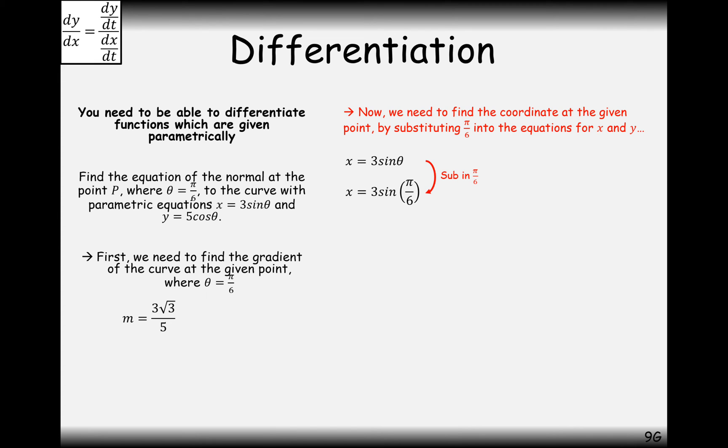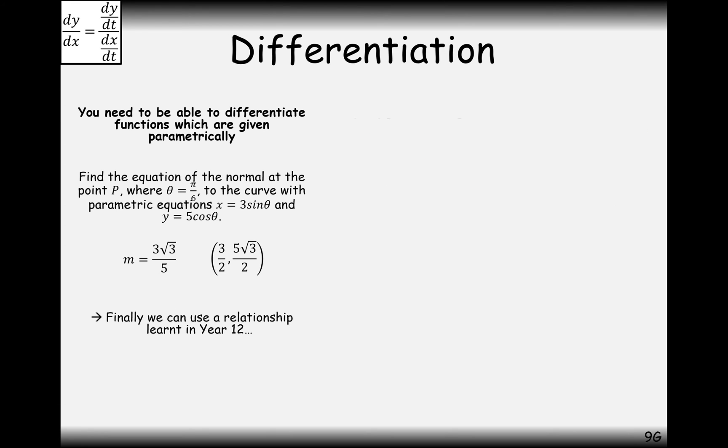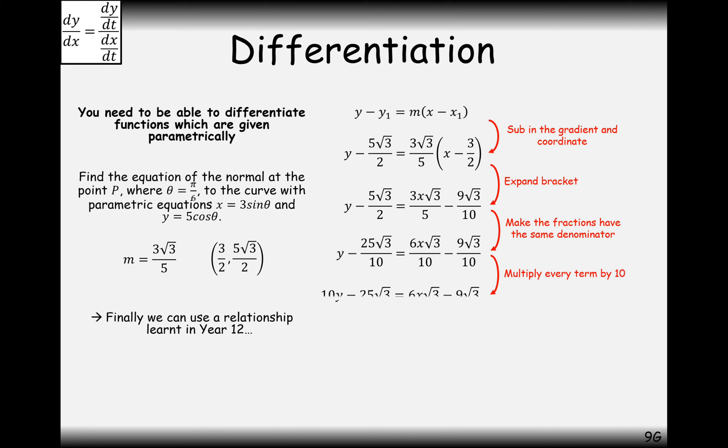So we work out the x value which is 3 over 2. Substitute in the y value which is 5 root 3 over 2. And then effectively substitute it into y equals mx plus c. Sometimes people use this funny relationship here, but basically you're just substituting into y equals mx plus c. Simplifying your answers, creating common denominators in the fractions. And it looks like this here is our final answer.